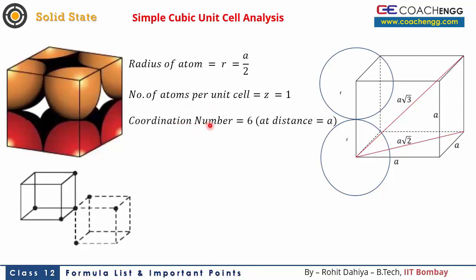The coordination number — that is, the number of nearest neighbors — is 6. I have drawn a diagram with two adjacent cubes. If you look at any particular atom, it has neighbors: 1, 2, 3, 4, 5, and 6. These 6 atoms are at a distance of 'a'. All other atoms are comparatively farther from this atom, so these are the 6 nearest neighbors and the coordination number is 6.